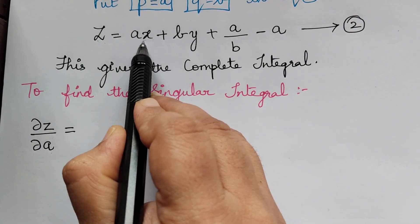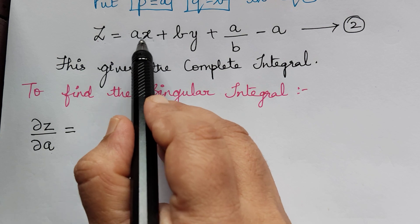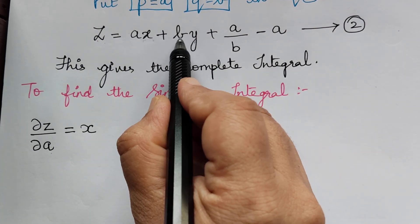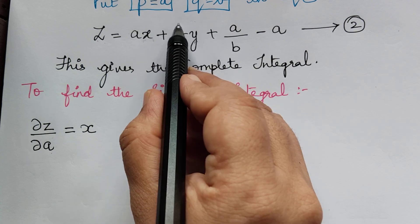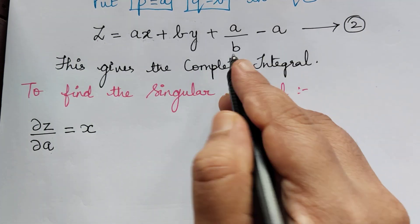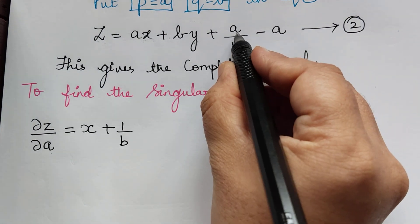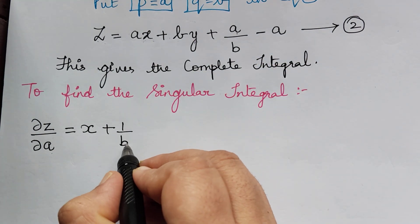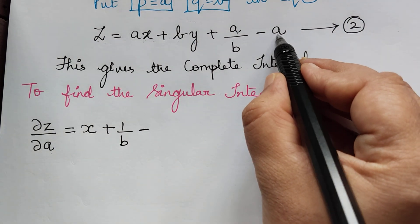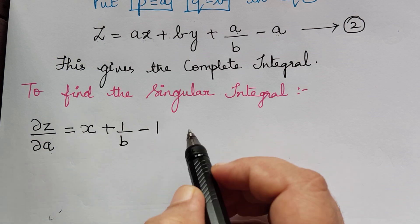Differentiating z with respect to a partially: here x is treated as constant, so the differentiation of a with respect to a is 1, giving us x. The term by is treated as constant so it becomes 0. The differentiation of a by b gives 1 by b, and the differentiation of a is 1, so we get 1 by b minus 1. This is dou z by dou a.